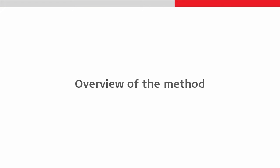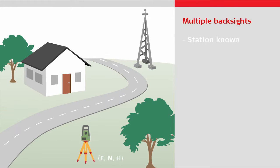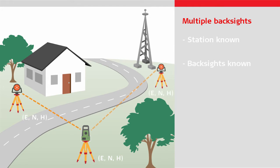The multiple backsights method can be used in the following case: if the point over which you will position the total station is known, and there is at least one backsight point which can be measured to. The orientation of the total station will then be computed based on the measurements to the backsights and, if desired, the height of the total station. Before completing the setup it is possible to look at the quality of the measurements to the backsights and exclude any measurements which may be considered wrong or inaccurate.